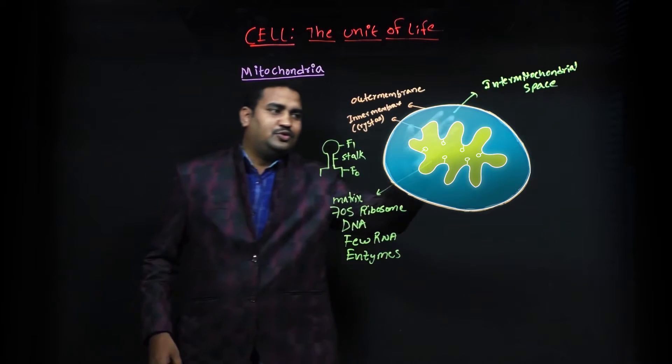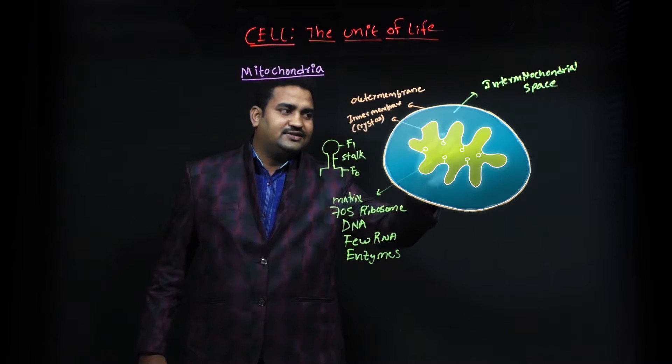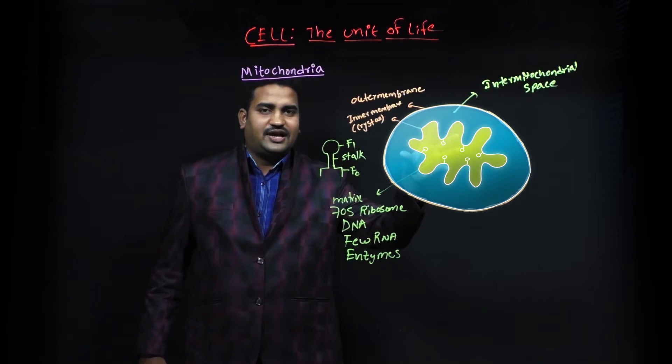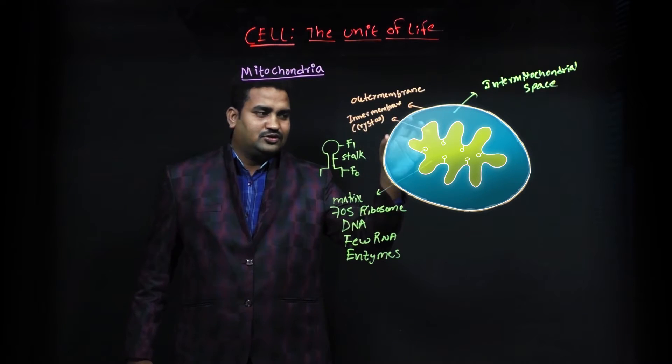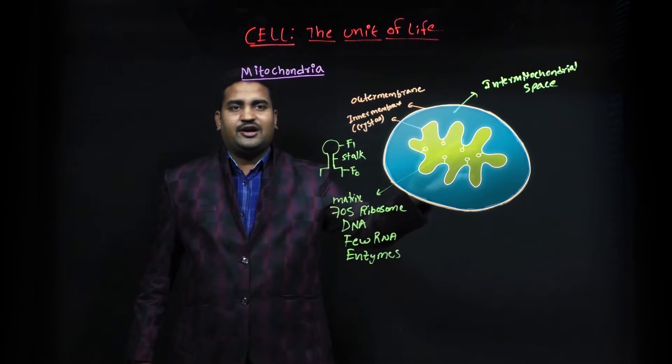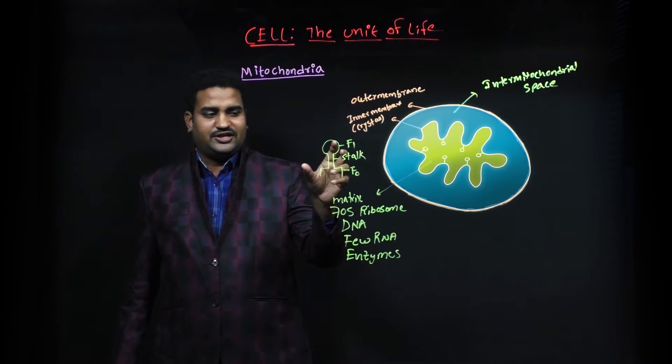It consists of two layers. The outer layer is continuous and the inner layer is highly folded. This highly folded inner layer is also known as cristae. Cristae contains many oxysomes. When you look at the oxysome structure...